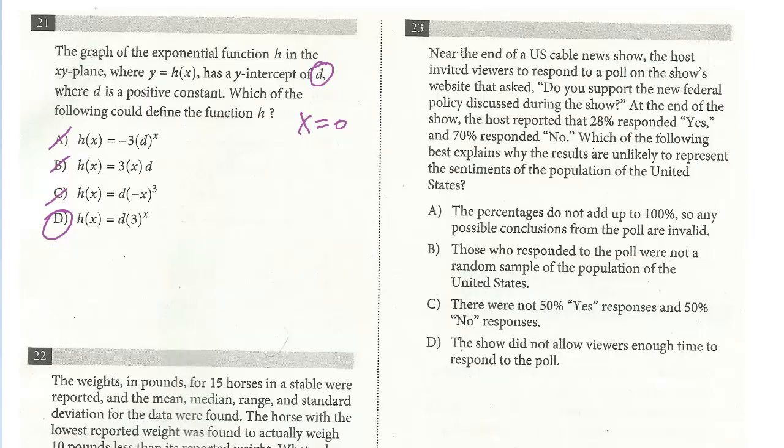Let's take a look at the next one, 23. Near the end of a US cable news show, the host invited viewers to respond to a poll on the show's website and asked, do you support the new federal policy discussed during the show? At the end of the show, the host reported that 28% responded yes and 70% responded no, which of the following best explains why the results are unlikely to represent the sentiments of the population of the United States. You should know right away, without even looking at the answers, that this is a flawed sample. Because for a sample to be an accurate representation of the population, it has to be random, it has to be a fair cross-section. They're only asking people who were watching this cable news show. First of all, not everyone watches cable news or has cable, but also just think about what about the show itself? What if it were like Fox News, where only a certain demographic who has cable watches it? So certainly not representative of the general population.